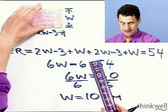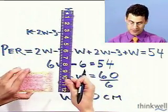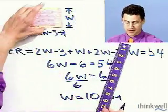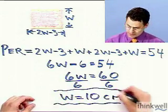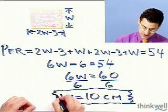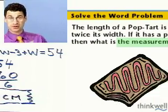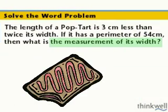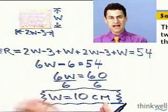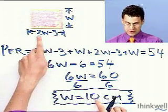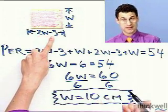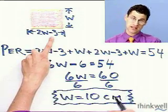You can check that by measuring the Pop-Tart. The width is 10 centimeters. You always want to make sure when you do a word problem that you're actually getting the answer that was asked. They're asking for the width, so the width is 10. If they asked for the length, I'd go back and say that's 2 times the width minus 3, which would be 20 minus 3, which is 17.